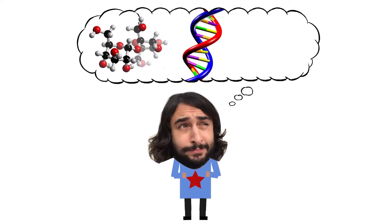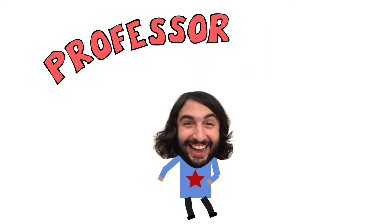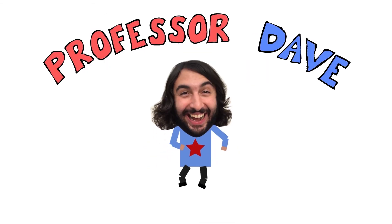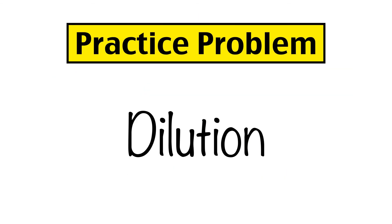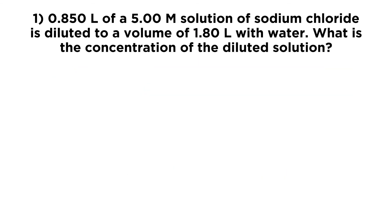He knows a lot about the science stuff, Professor Dave Explains. Today we're going to try some dilution problems. So the first one says: 0.850 liters of a 5.00 molar solution of sodium chloride is diluted to a volume of 1.80 liters with water.